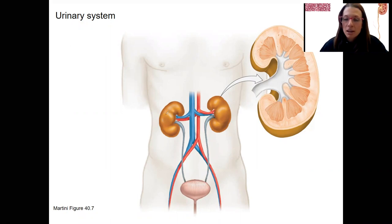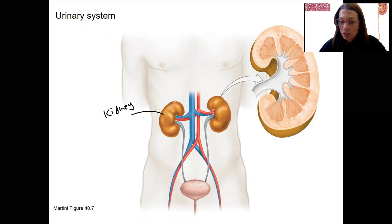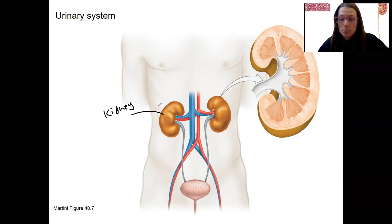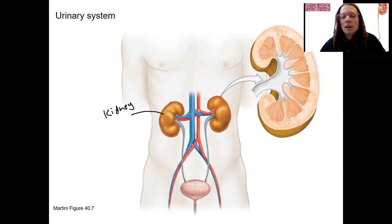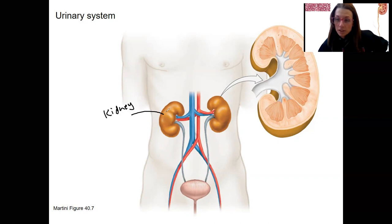We'll do some anatomy and then go back to those functions. Here are our kidneys — they're going to do the bulk of the work of this process. There are two of them, and they are retroperitoneal, so behind the peritoneal cavity that encloses most of the digestive system. You've seen them in the rats, how far back they are right in the back of the organism.